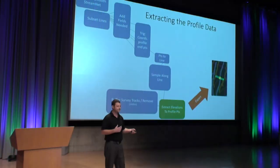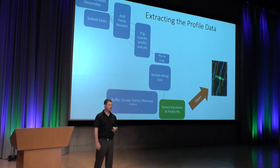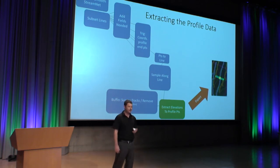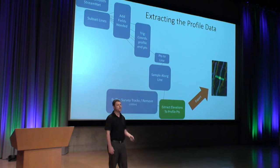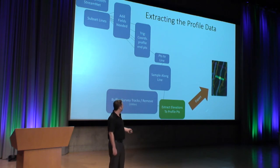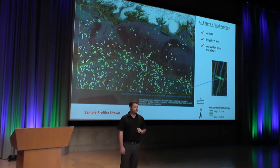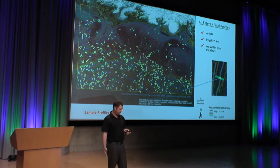We worried about survey tracks here too, so I removed any data within a kilometer of a survey track. Finally, we use the extract multi-values tool to build our dataset. It looks like this: you can see a gully and two ridges crossed by a profile where we've taken samples.